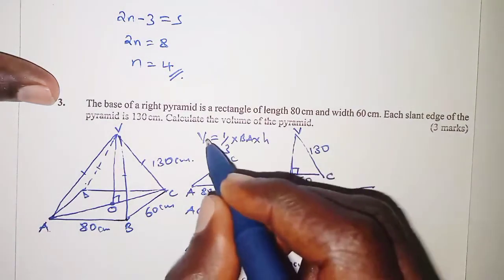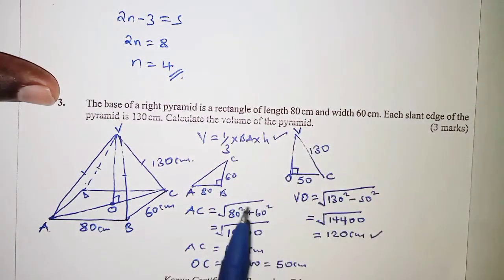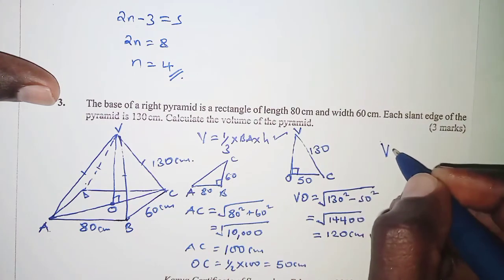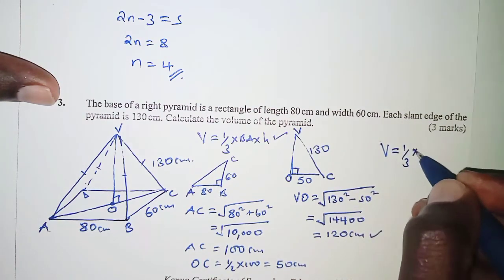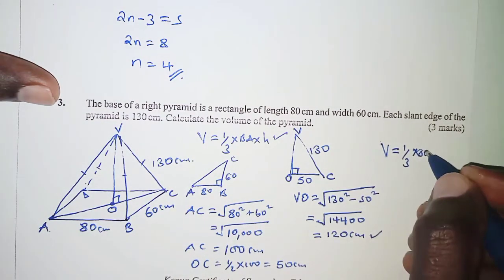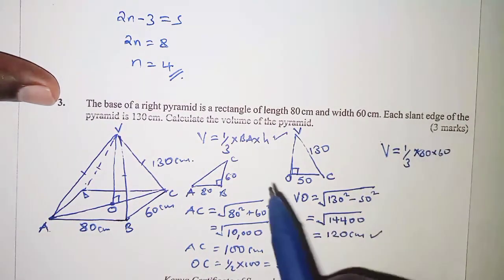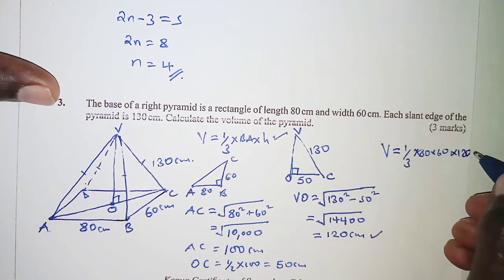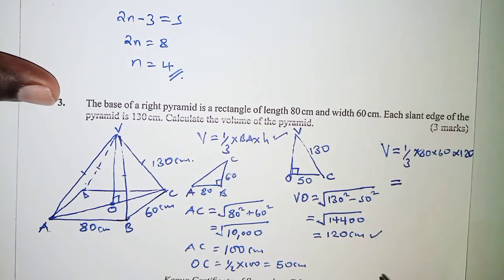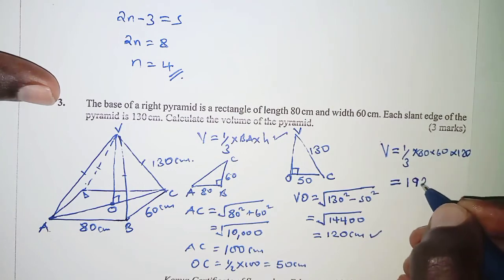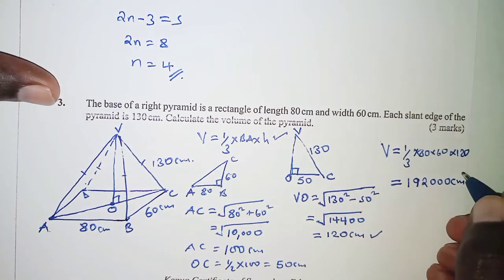Now we substitute into the volume formula: volume equals one third times the base area (80 times 60) times the height 120. This gives a final volume of 192,000 cubic centimetres.